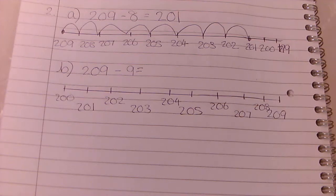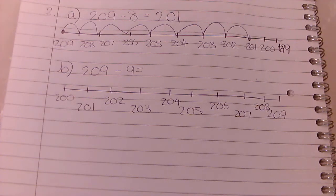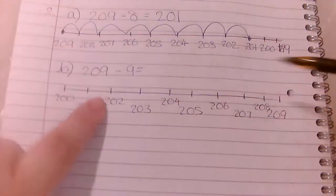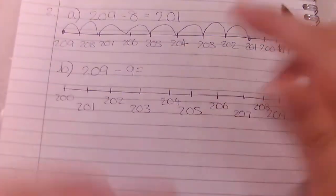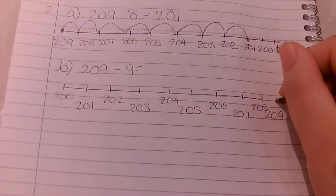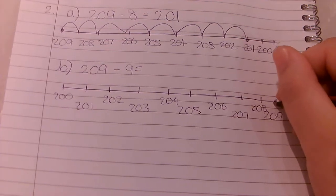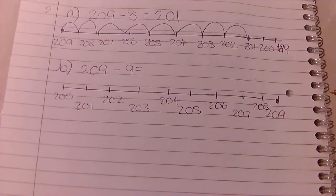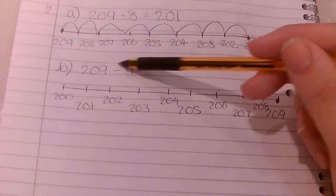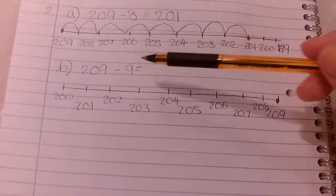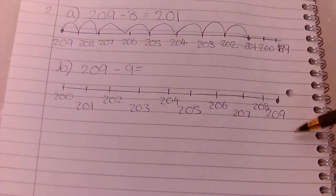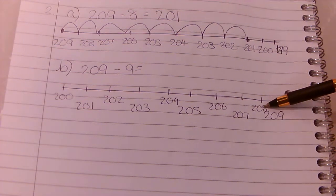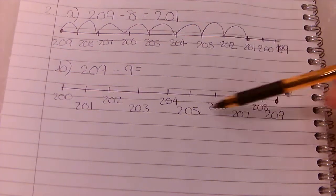But we can use both number lines, we just have to be careful where we start and which direction we do our leaps in. So we're starting with 209, that bit's easy, trying to find 209 is easy, it's right there at the end. Might not always be at the end but just in this number line it is. And we're subtracting 9, so it's going to be 9 smaller.